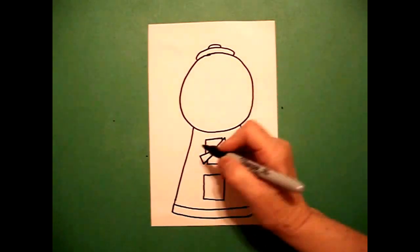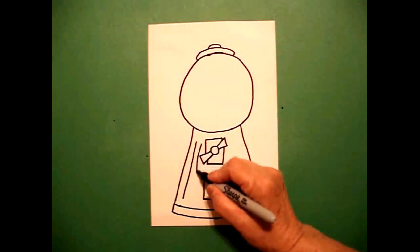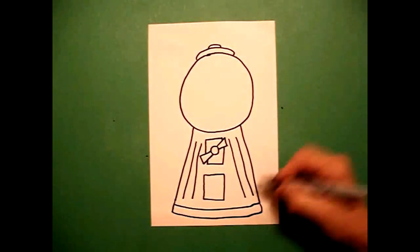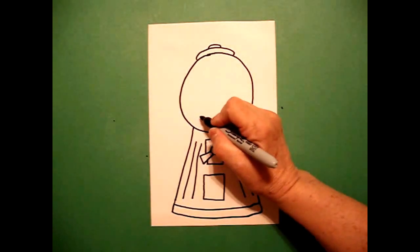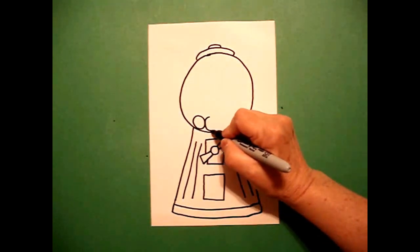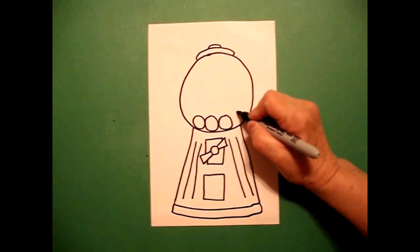Now I come to the side and I draw one, two straight diagonal lines and one, two straight diagonal lines on the right. Now I come inside my circle and I draw baby circles inside the bigger circle.